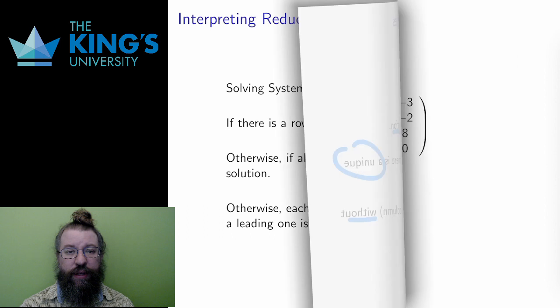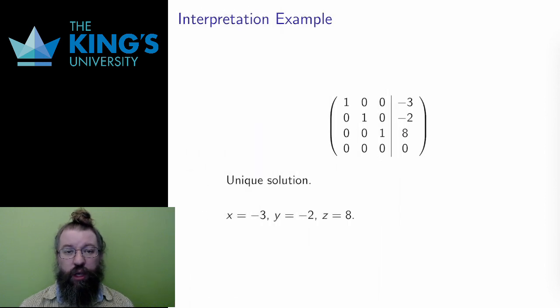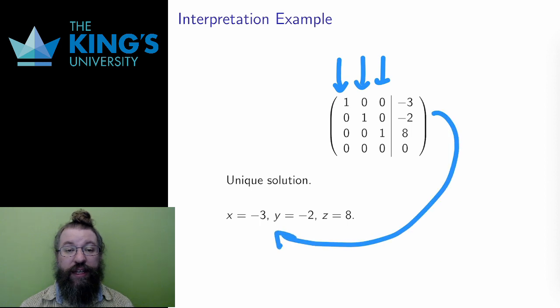All right, let's get into some interpretation examples. First, something with a unique solution. Here is a reduced row echelon matrix. In this case, each column has a leading one, and there are no zero equal one rows. So this has a unique solution, x equals negative three, y equals negative two, and z equals eight.